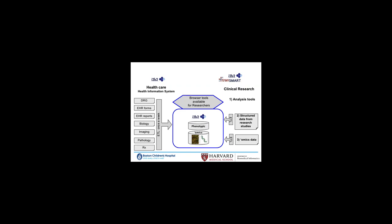TransMart enables three things that were lacking within I2B2 by itself: statistical tools on top of the platform, the ability to easily load and extract data from research studies, and the ability to integrate mixed data. When it became open source four years ago, there was a full I2B2 integrated within TransMart. But in versions 1.1 and 1.2, I2B2 was taken out of the core TransMart branch. Here at Harvard we kept it and did a lot of enhancements, because we really think there's real value in having a full I2B2 to represent all this complex data.